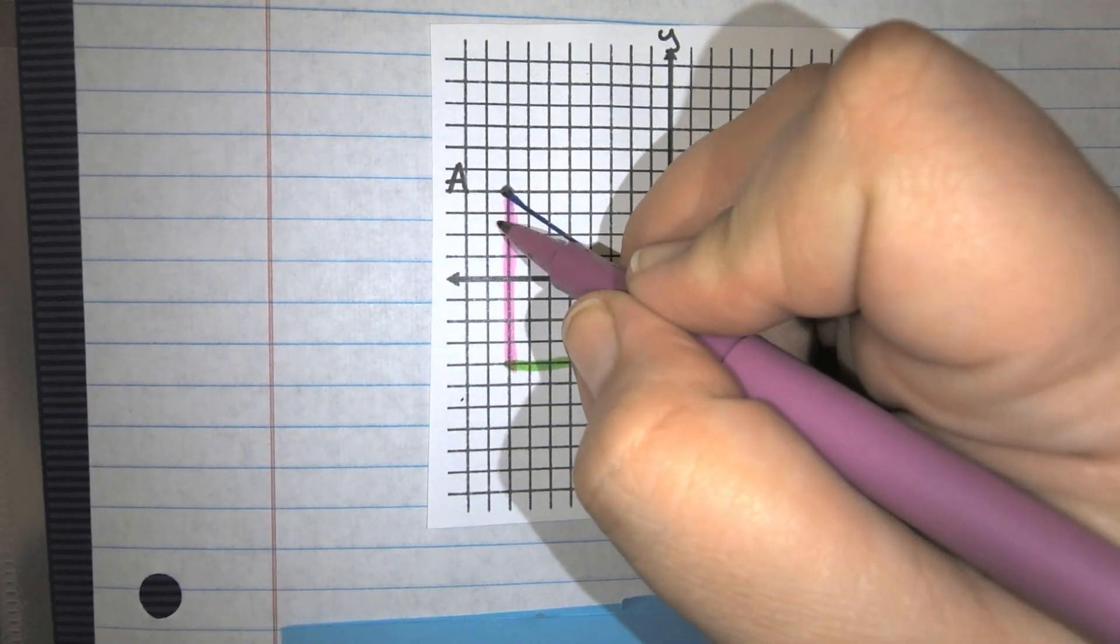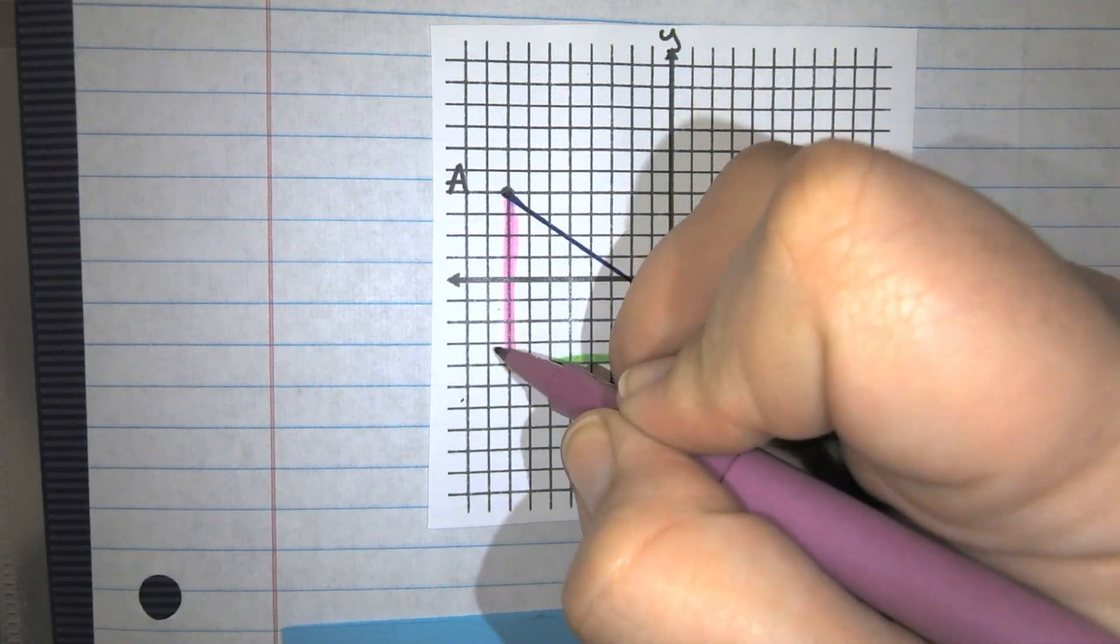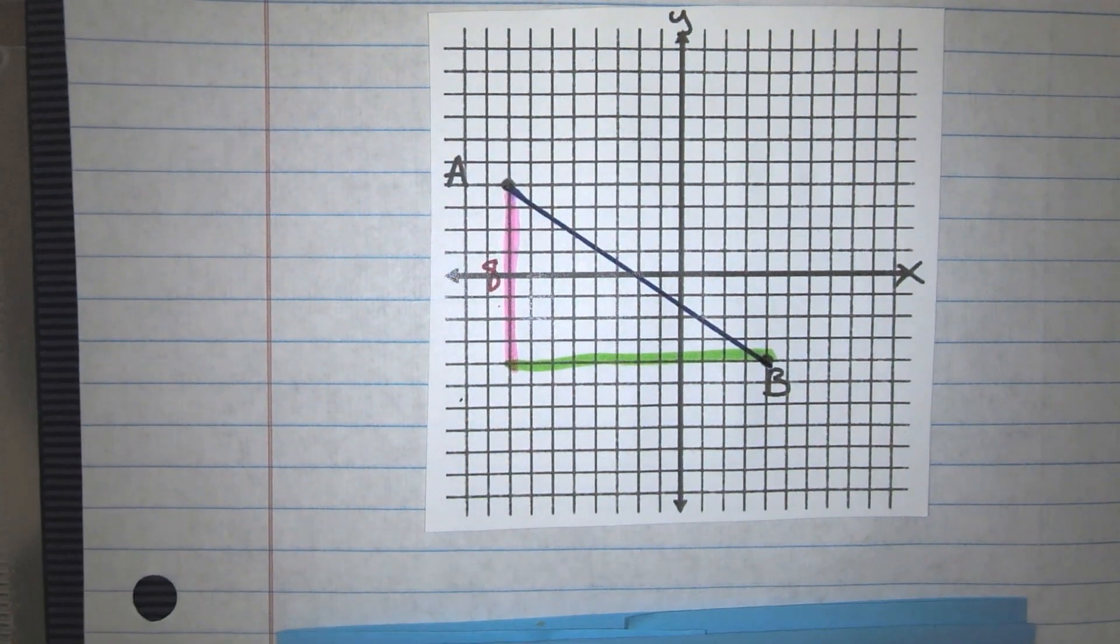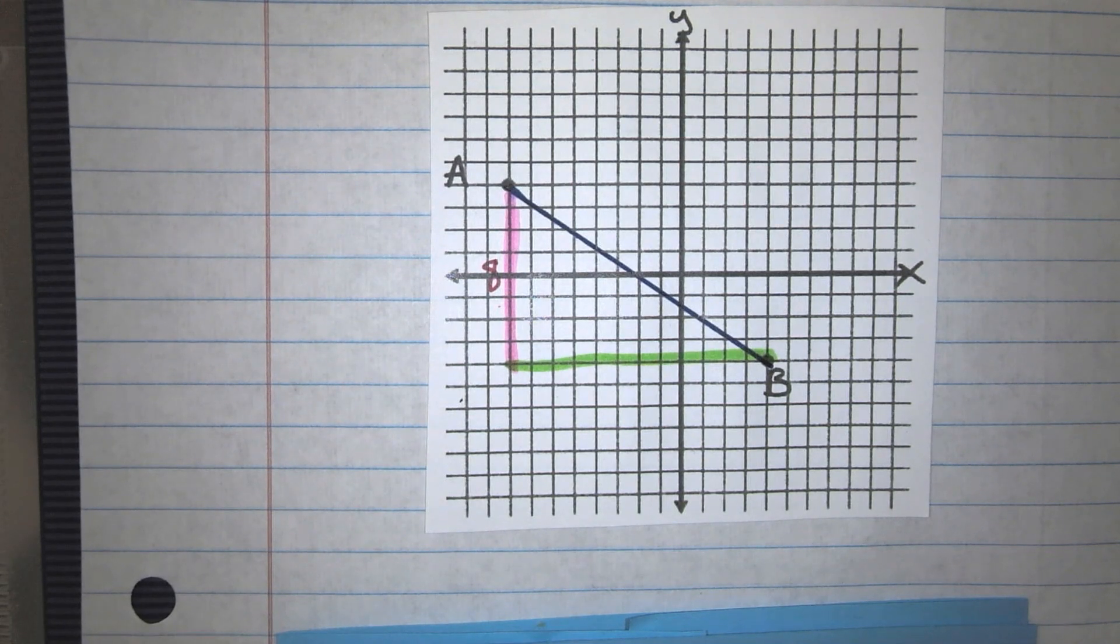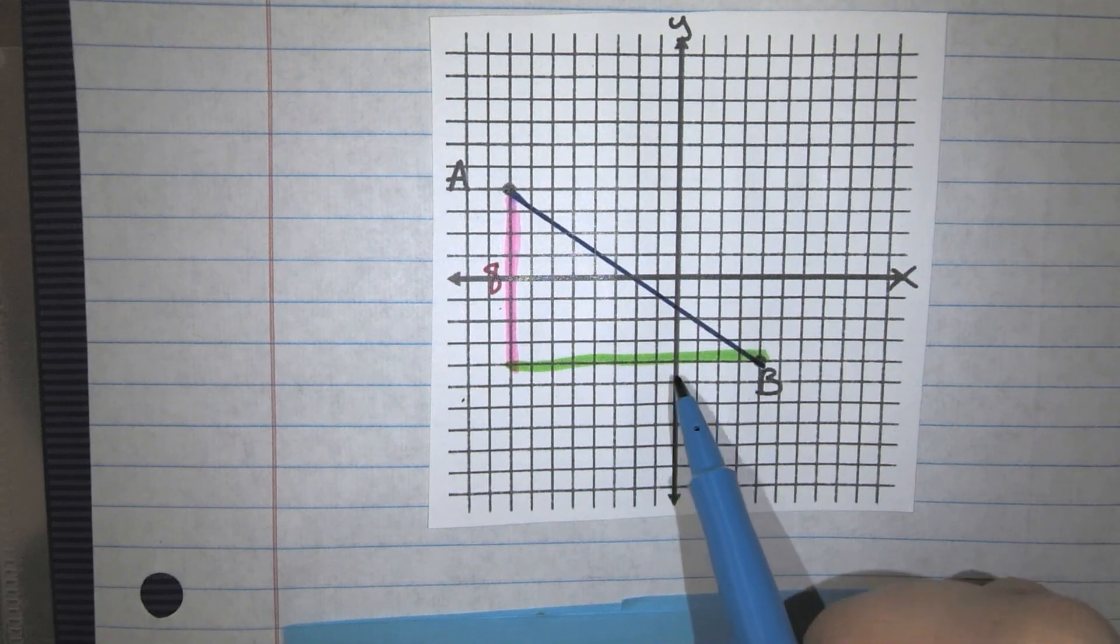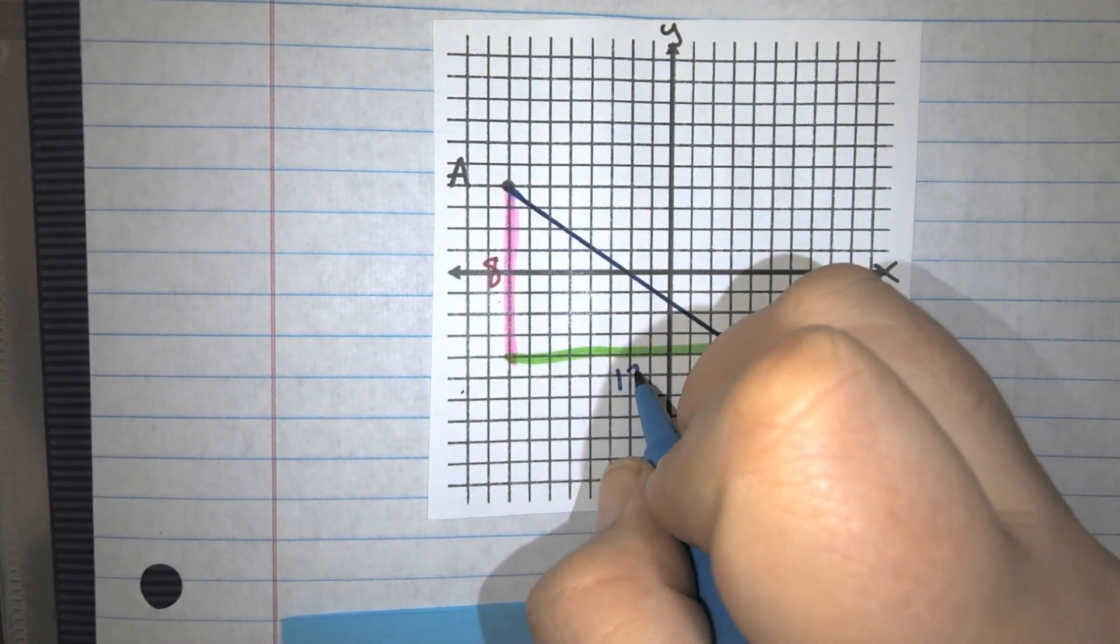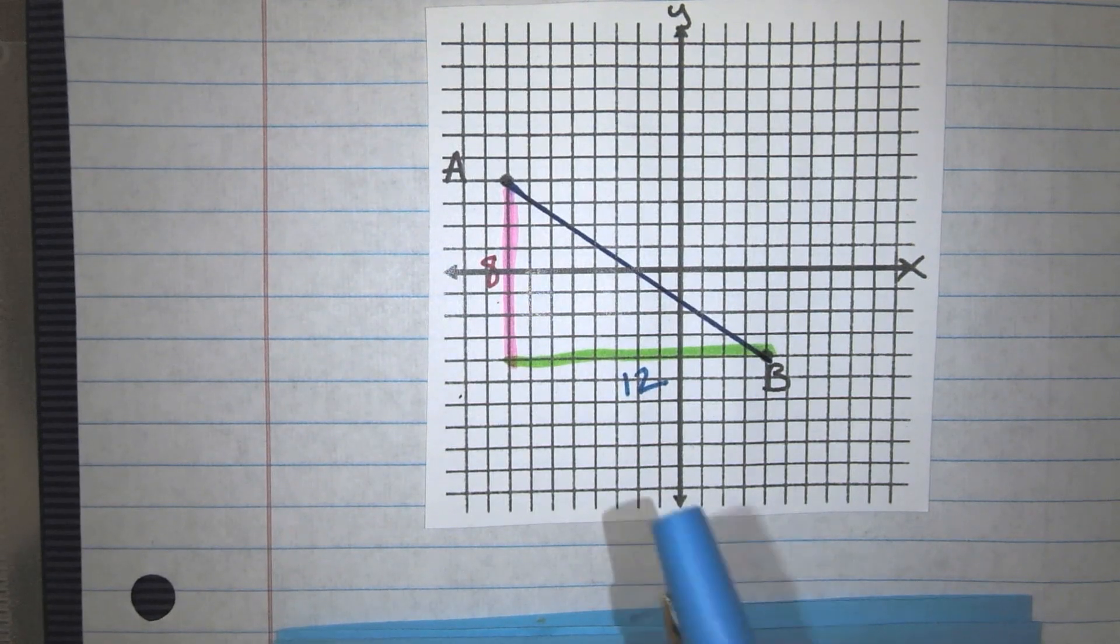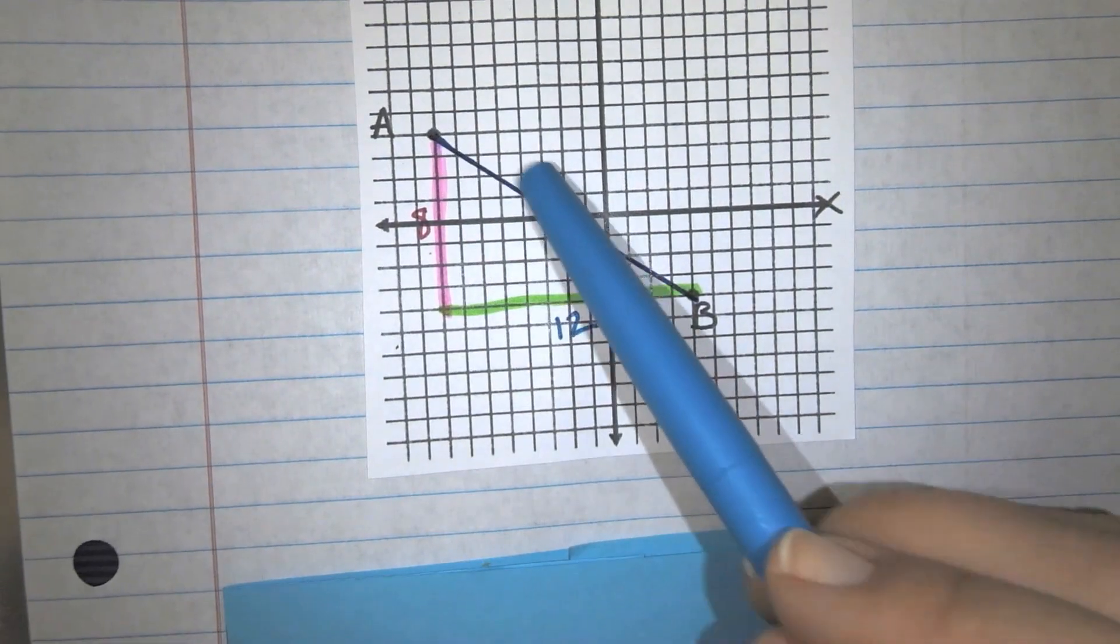So having both of those distances is going to help me calculate the distance of this diagonal piece. Because I can't count boxes along the diagonal the way I can count them when they're vertical or they're horizontal. So if I count this one, it's 1, 2, 3, 4, 5, 6, 7, 8 units long. So this side is 8. If I count the bottom, it is 1, 2, 3, 4, 5, 6, 7, 8, 9, 10, 11, 12 units long.